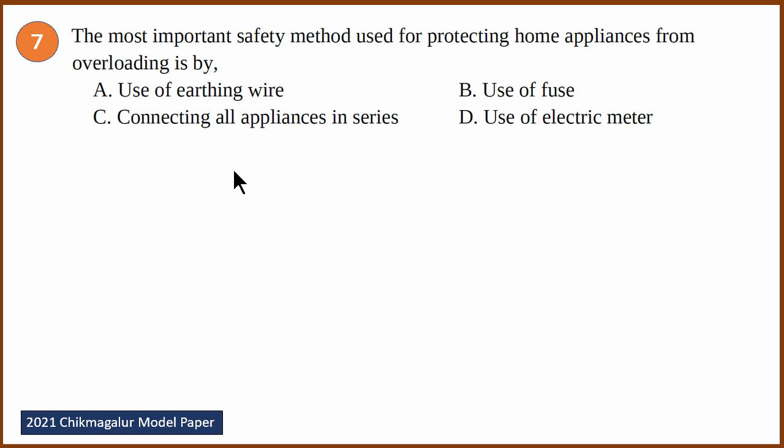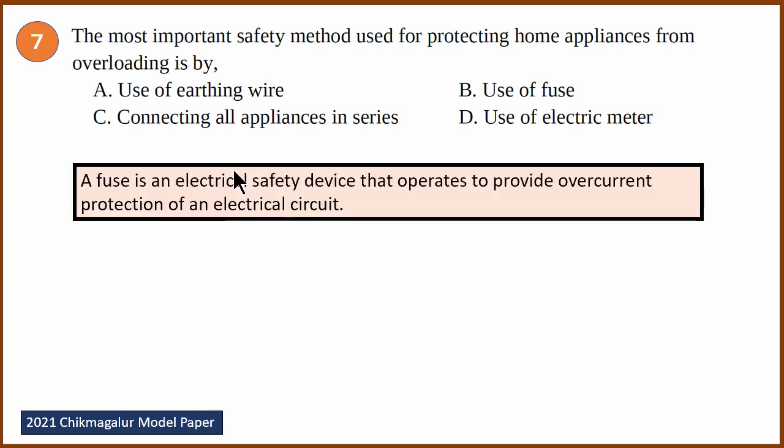Seventh question: the most important safety method used for protecting home appliances from overloading. Earthing is also true, but it is not the most important safety method for overloading. To prevent overloading, we use a fuse. The answer is B.